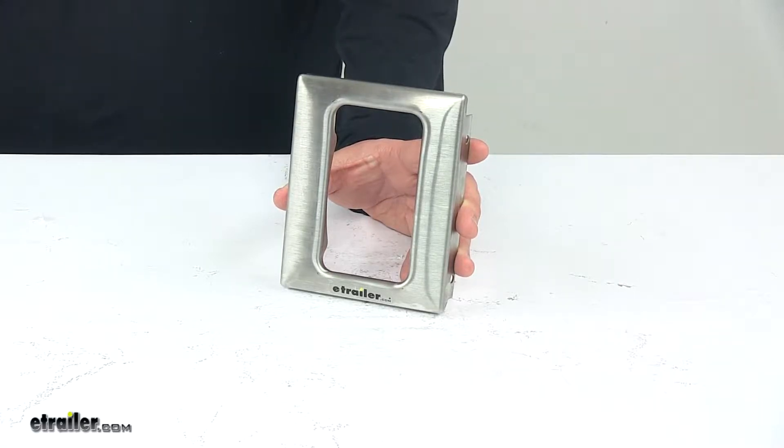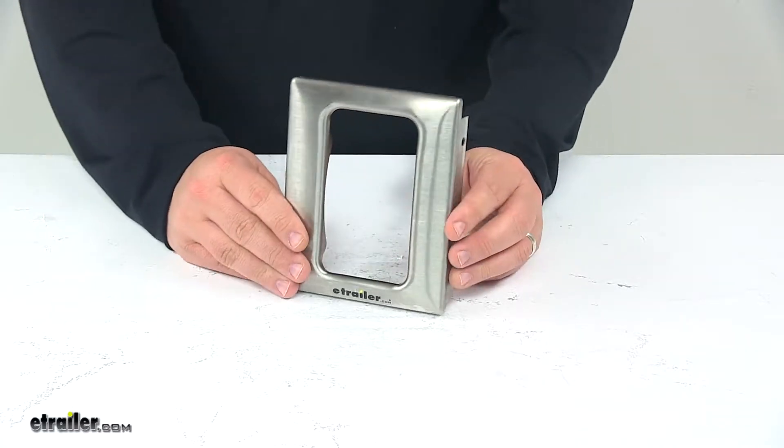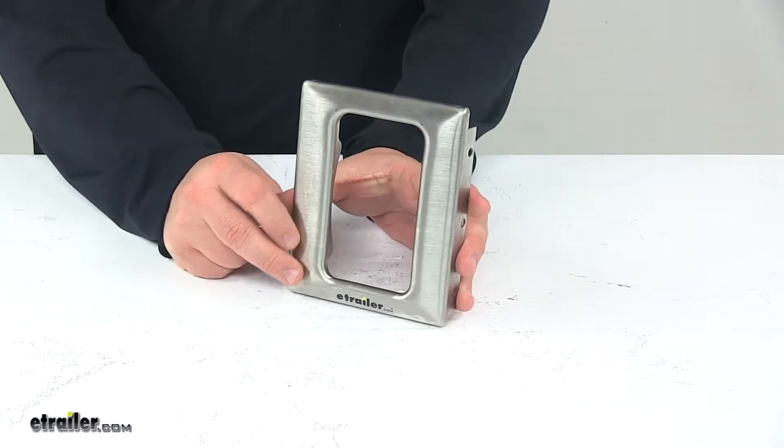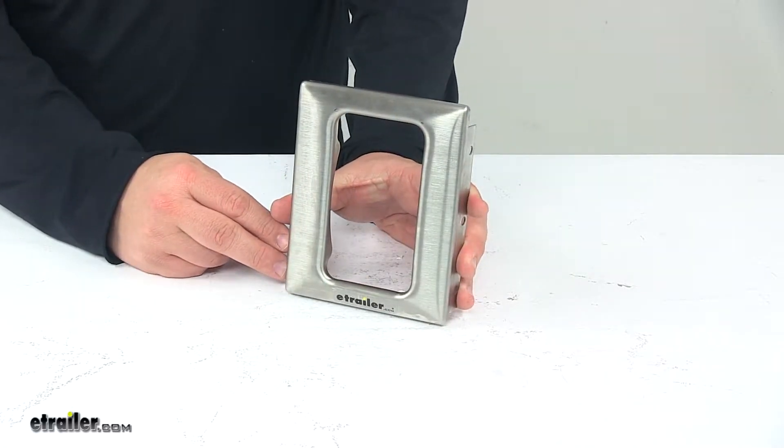Today we're taking a look at the Dutton-Lanson Strongarm Electric Winch Front Plate. This unit replaces the front plate on your Dutton-Lanson Strongarm 9,000 pound electric marine winch, part number DL25215.